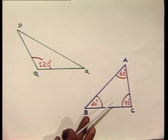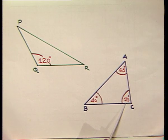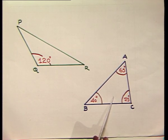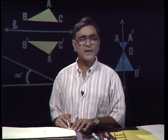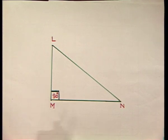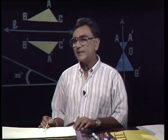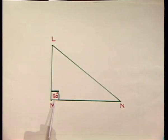Triangle ABC has angles equal to 65 degrees, 40 degrees, and 75 degrees — all the angles of this triangle are less than 90 degrees. So such a triangle is known by the name of acute angled triangle. Besides this, can we think of a triangle where one angle is 90 degrees? Yes, of course. Here is triangle LMN where this angle is 90 degrees. This triangle is called a right angled triangle, and in this one, the triangle is right angled at M.